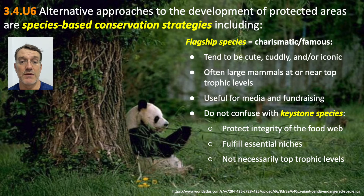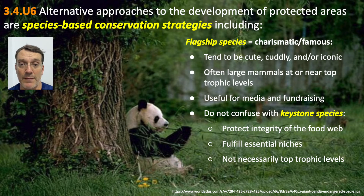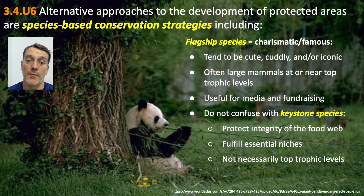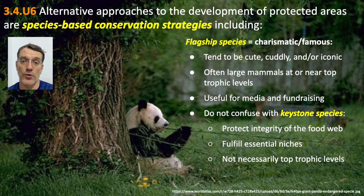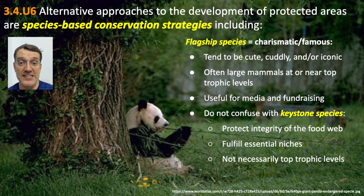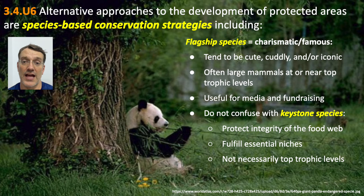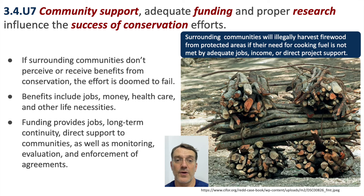Species-based conservation frequently uses a flagship species — like the WWF panda logo. A flagship species is considered charismatic or famous; it draws people's attention and makes them feel engaged. But that's different from a keystone species. A flagship species is famous, but a keystone species is critically important for the functioning of an entire ecosystem. If a flagship species disappears, the entire ecosystem isn't necessarily going to collapse. Whereas if a keystone species disappears, the ecosystem is at risk of collapse because the food webs will fall apart.